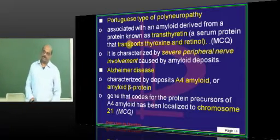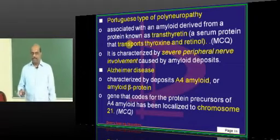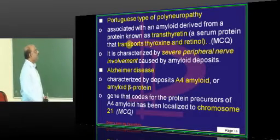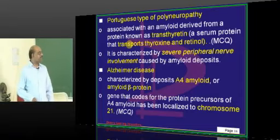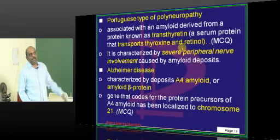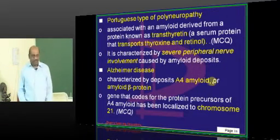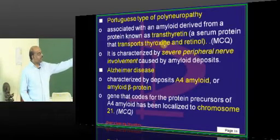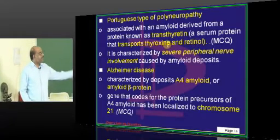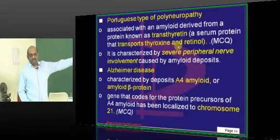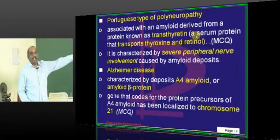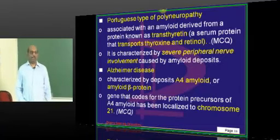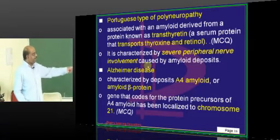There are miscellaneous scenarios of amyloidosis beyond primary and secondary. Portuguese type of polyneuropathy involves a special type of amyloid called transthyretin — the protein that transports both thyroxine and retinol. This transthyretin is implicated in Portuguese type of polyneuropathy, with peripheral nerve deposition.